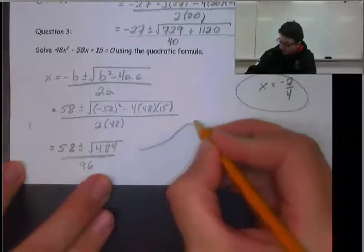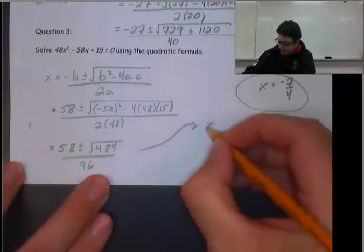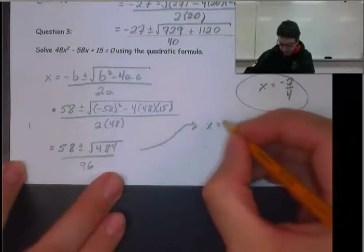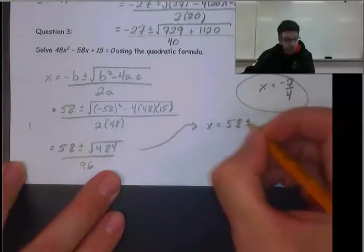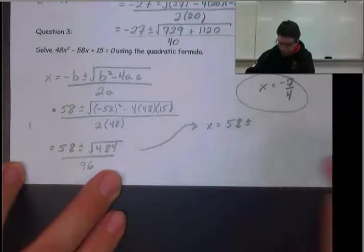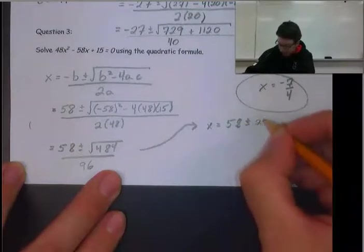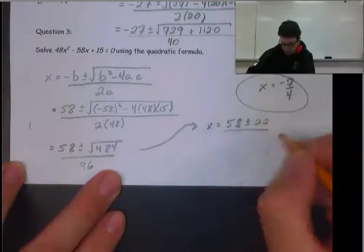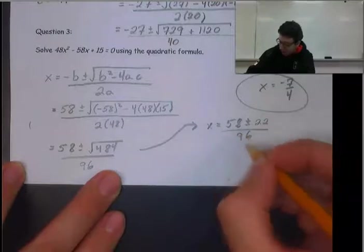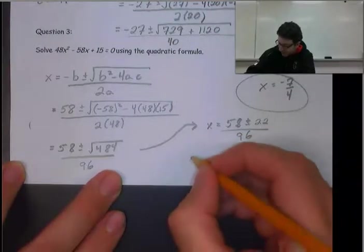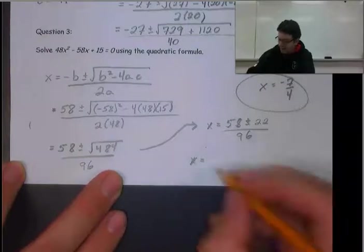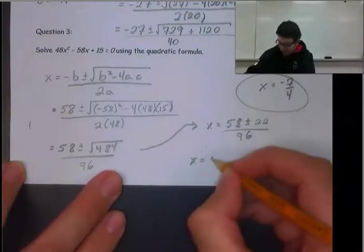Continuing, that leaves us with x = (58 ± 22) / 96. This leads to two solutions. Leave it as a fraction, but put it in simplest terms. 5/6 and x = 3/8.